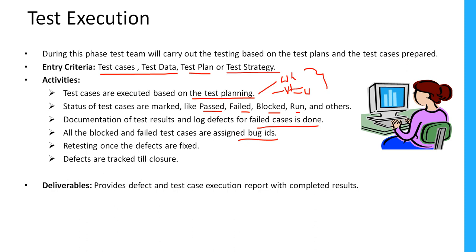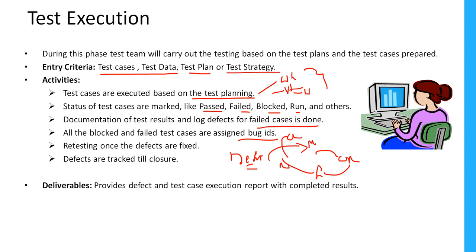Retesting is done once the defects are fixed. As soon as the defects are fixed by the developer, we need to retest them in the next build. Defects are tracked till closure — once we raise a defect it should be tracked till the end of the cycle. When you raise a defect it will be in new status, then the developer will open it, fix it, then we re-verify it and close it. It goes through multiple statuses and stages, so we need to track them.